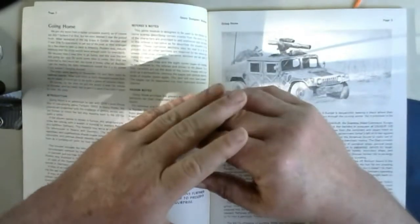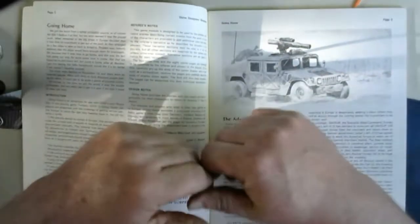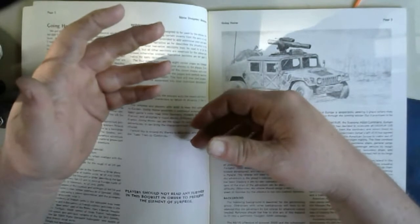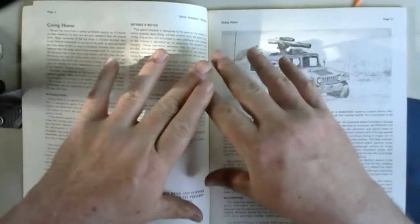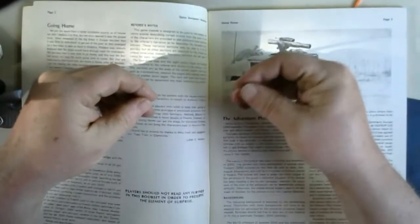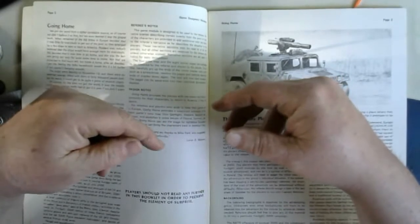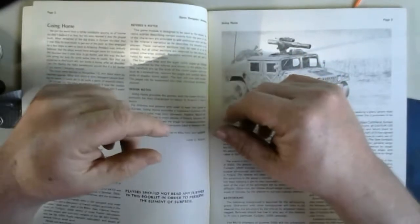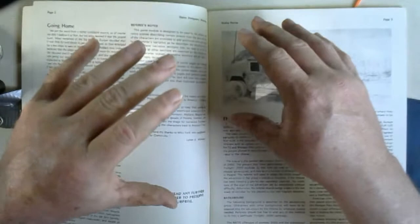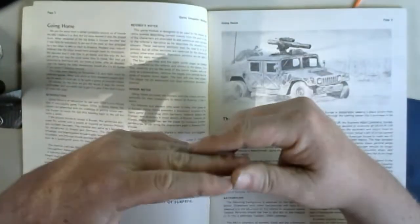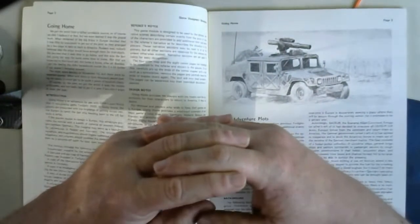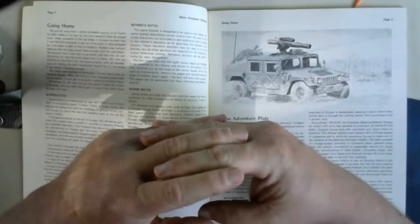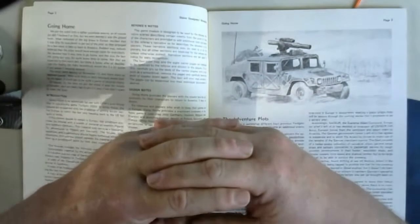There are a number of modules and source books set in other places of Europe and the world, including quite a few that are set back in the United States or what's left of it. This would be potentially a pivot point. They could go through the module, get back to Bremen, get on board the last task force out and make their way back to the states, where they can become embroiled in the politics and survival going on there.